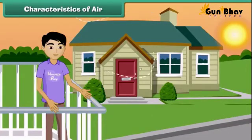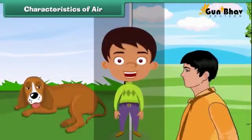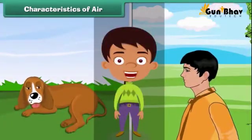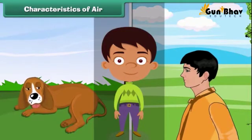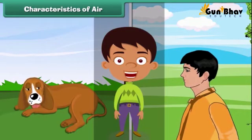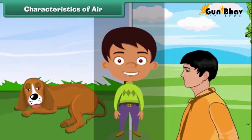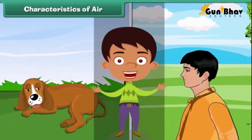Characteristics of air. Air is all around us. All living things breathe in and breathe out air continuously. But we cannot see it — we can only feel it. Air has no color, taste, or odor.